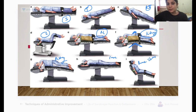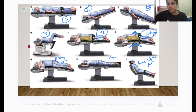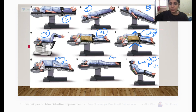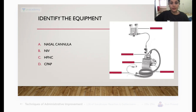In prone position, what is the most common injury? You have to be particularly careful about the eyes — you get eye injury. In beach chair position, venous thromboembolism is the most worrisome complication. Moving on to the next question.